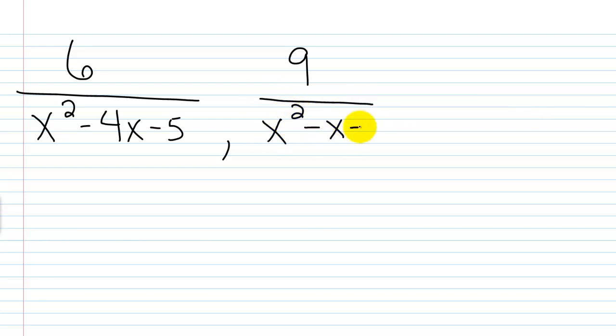Okay, let's look at one that's a little tougher. Let's say you had 6 over x squared minus 4x minus 5, and let's say you had 9 over x squared minus x minus 20, and then lastly let's say we had 2 over x squared minus 10x plus 25. So again, the procedure is the same. I'm going to factor each denominator completely.